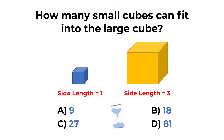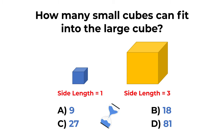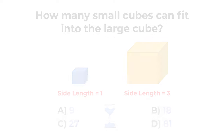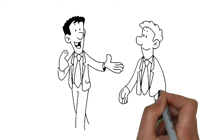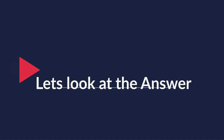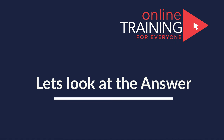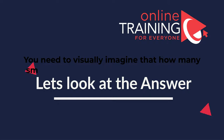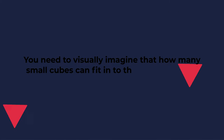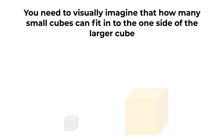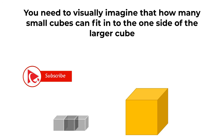Do you know the answer? Give yourself 20 to 30 seconds — about as much time as you get on the real test. Ready or not, let's get to the correct solution together. To solve this challenge, you need to visually imagine how many small cubes can fit into one side of the larger cube. The answer is that three small cubes can fit on each side.